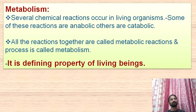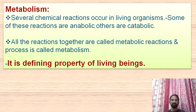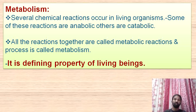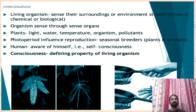Several chemical reactions occurring in a living organism are known as metabolism. Some reactions are anabolic and some are catabolic. Anabolic reactions construct complex molecules; catabolic reactions destruct complex molecules. Anabolism example: photosynthesis. Catabolism example: respiration. All these reactions together are called metabolic reactions, and this process is called metabolism. It is a defining property of the living organism, because without metabolic activity, no organism can remain living.